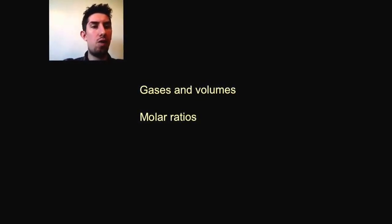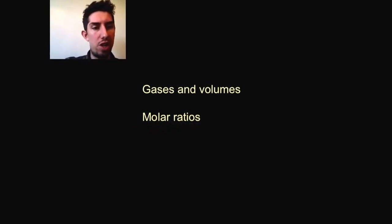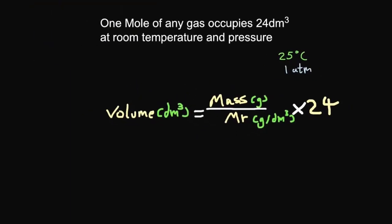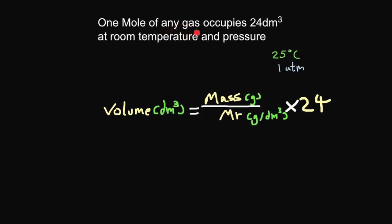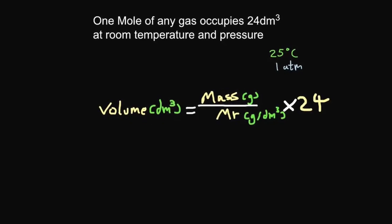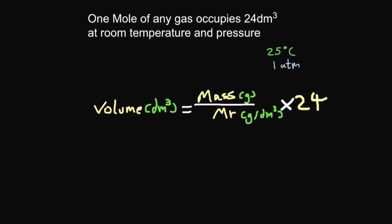This video is on gases and volumes, and the last question has a very difficult molar ratios question. One mole of any gas occupies 24 dm cubed at room temperature and pressure. Room temperature is 25 Celsius and pressure 1 atmosphere. So the equation you need to know is volume of a gas equals the mass of that gas divided by the Mr of that gas, times 24.